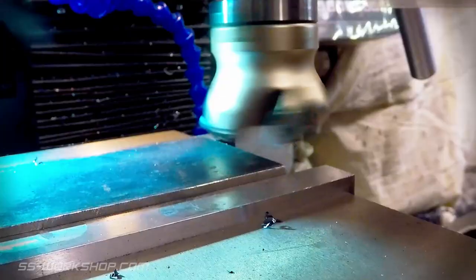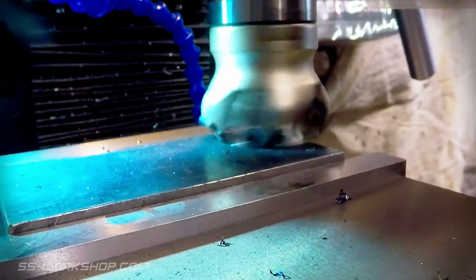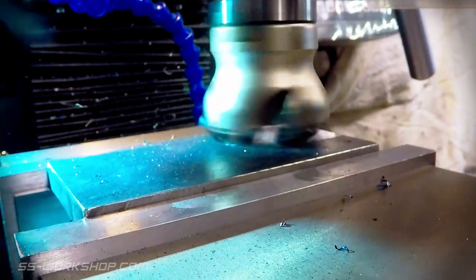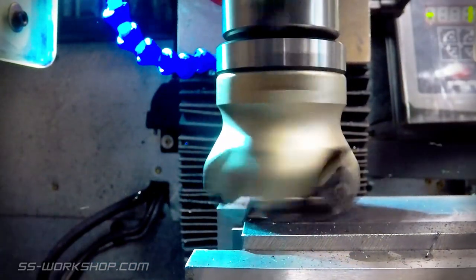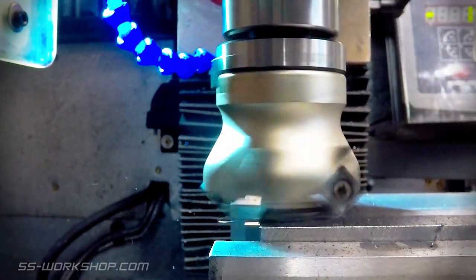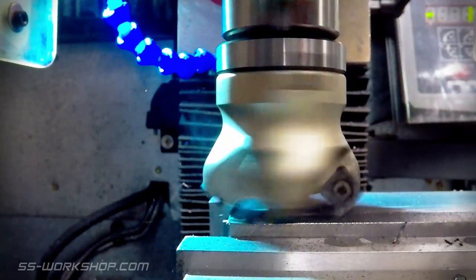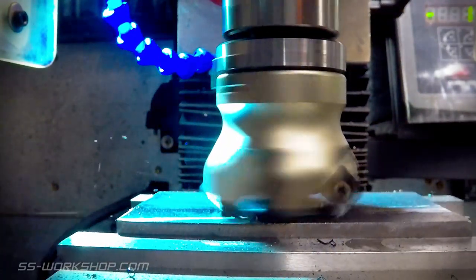With the flat bar cut it's time to head over to the mill where I use a 50mm carbide insert face mill to remove the scale and reduce the part to the required thickness. I take multiple passes with the cutting depth being up to about 1mm.